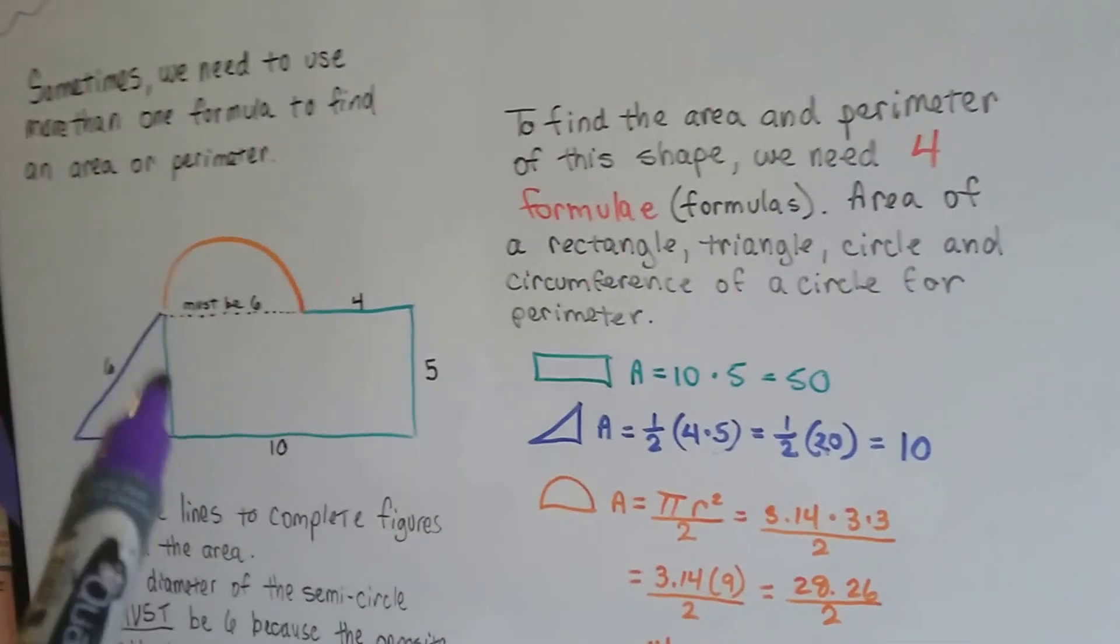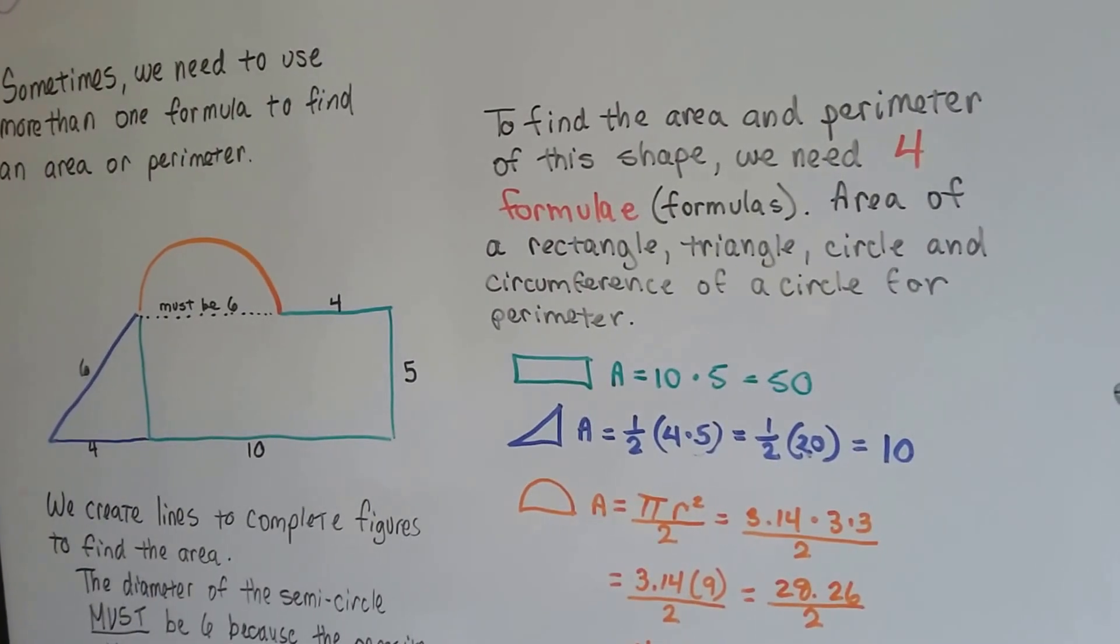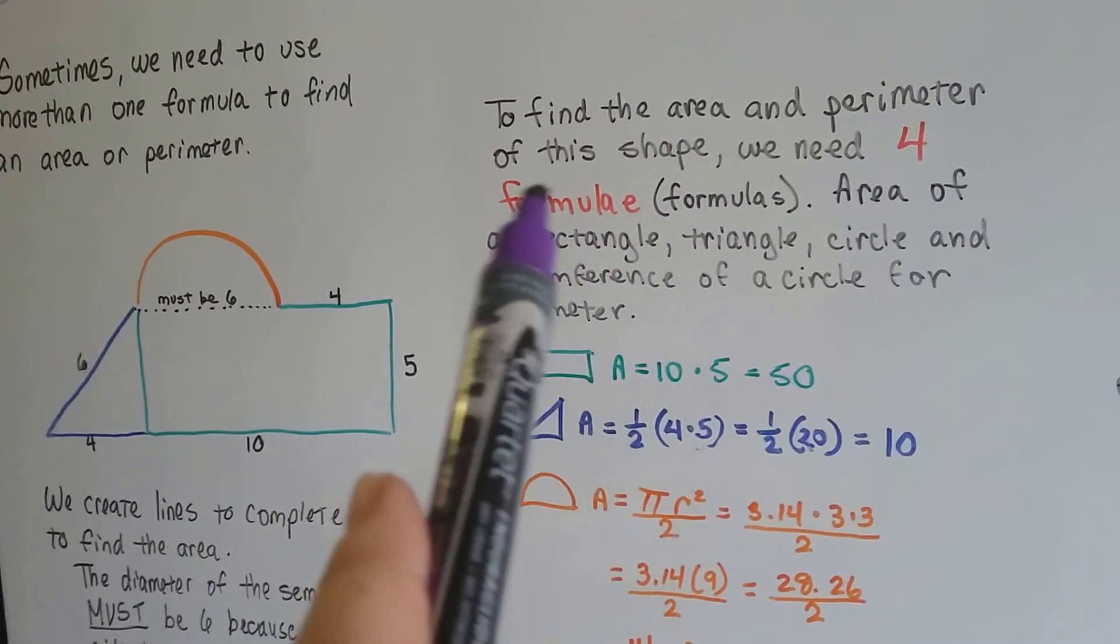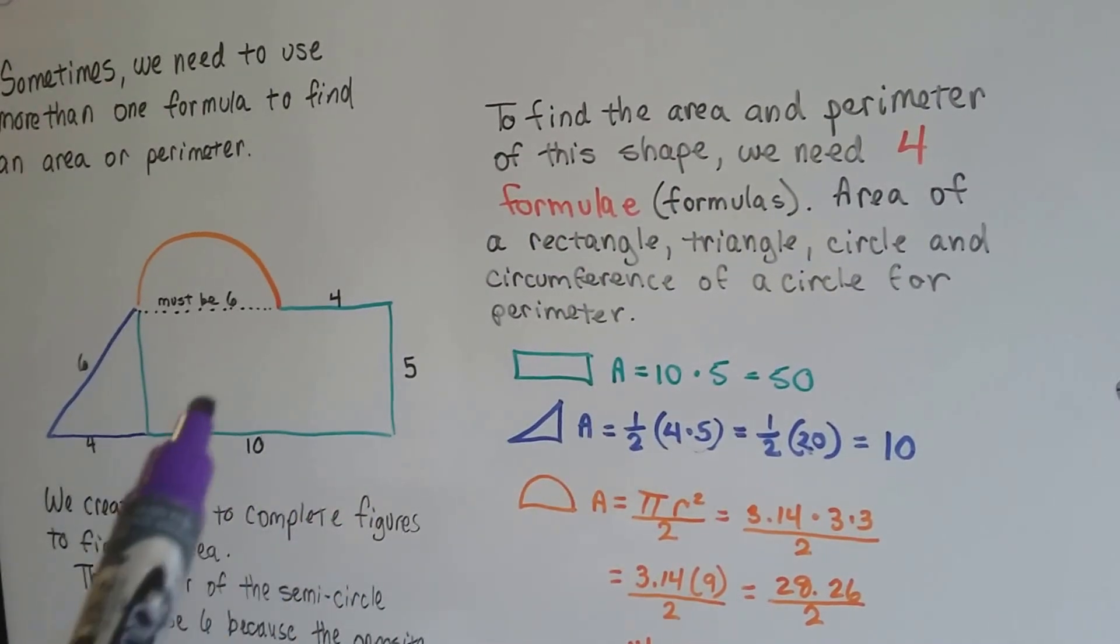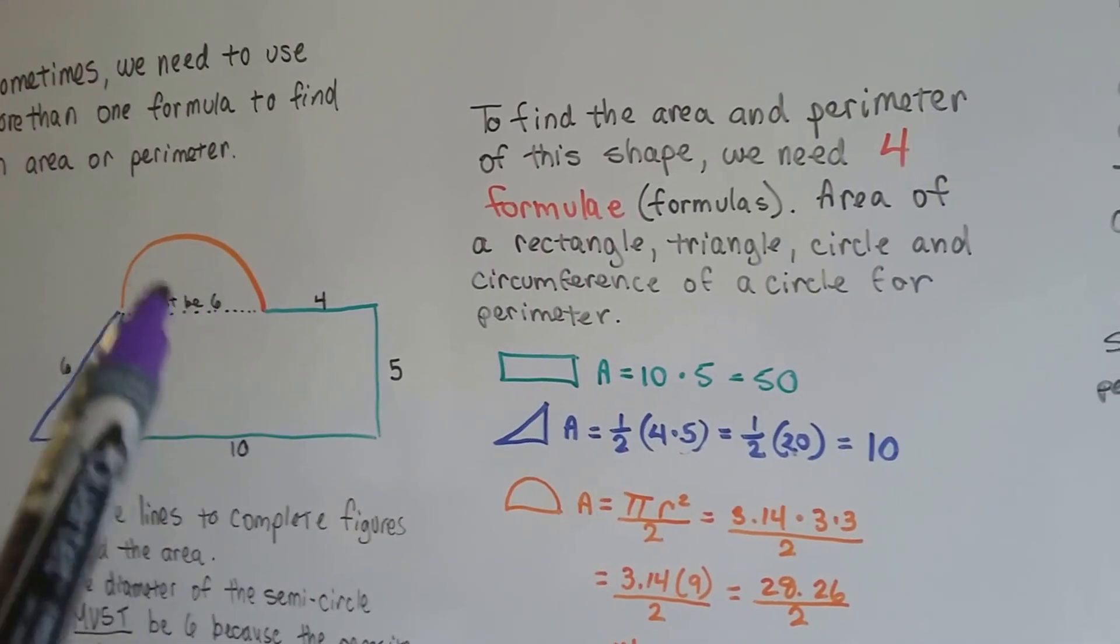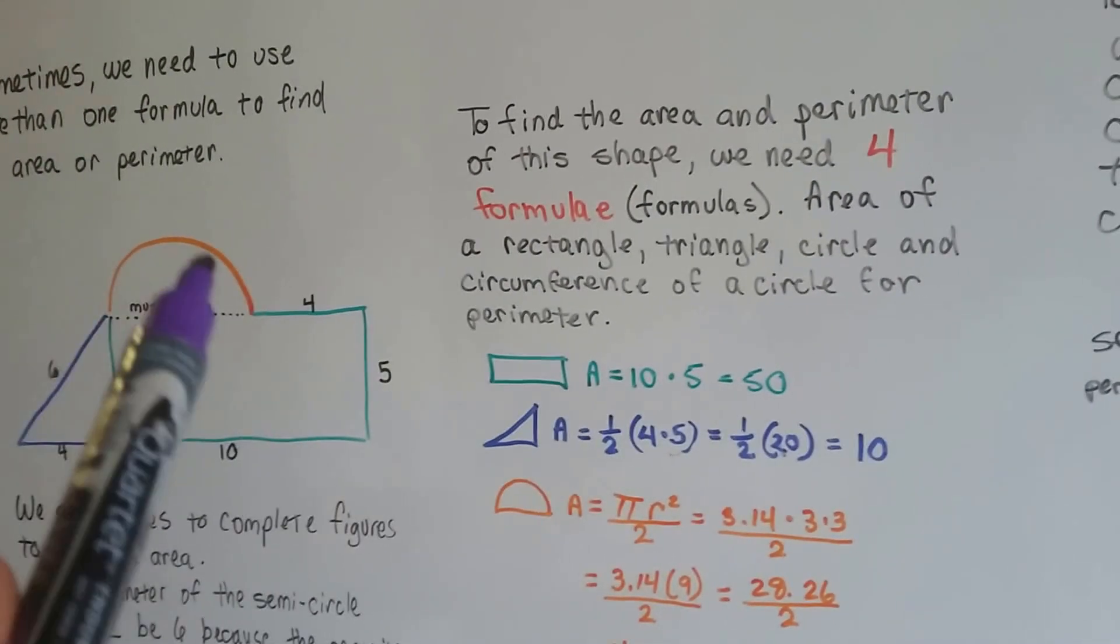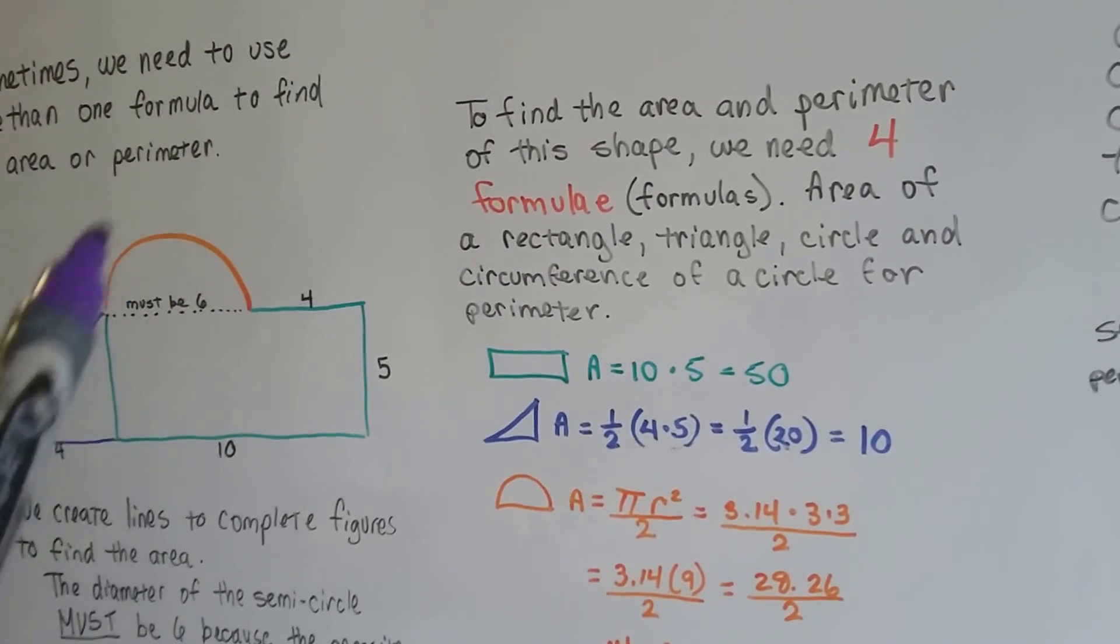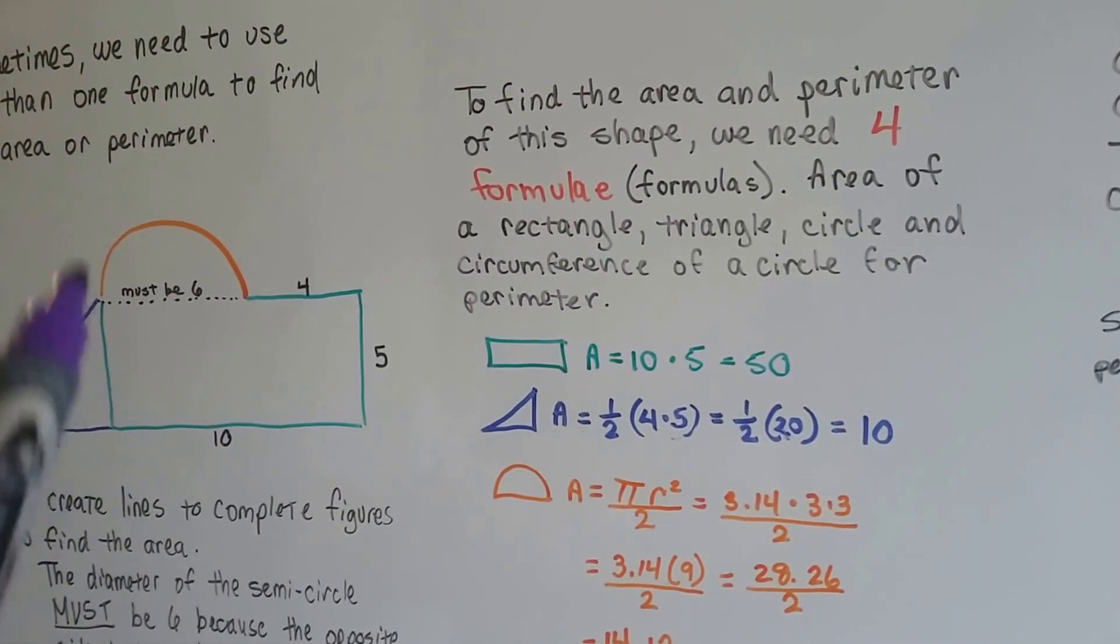To find the area and perimeter of this shape, we need four formulas. We need the area of a rectangle. We need the area of a triangle. We need the area of a circle, which we then have to cut in half. And we need the circumference of the circle, which we then need to cut in half to find the perimeter.